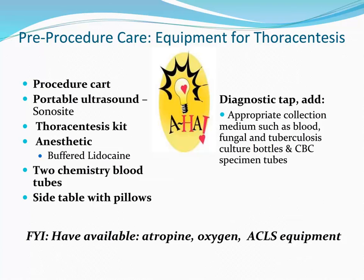Here is a list of things to get ready for your thoracentesis. Procedure cart: if this is a therapeutic tap and the patient has large pleural effusions, double check to make sure you have enough vacutainers stocked before you get started — if not, call down to central and order them. Portable ultrasound and thoracentesis kit can be found in the side door of the procedure cart. You will also need anesthetic, two chemistry tubes, a side table, and extra pillows. If you are doing a diagnostic tap, you may also need blood, fungal, and TB culture bottles. In the event of emergency, make sure your code card is available and have an ambu bag and a high-flow non-rebreather mask set up in your room.